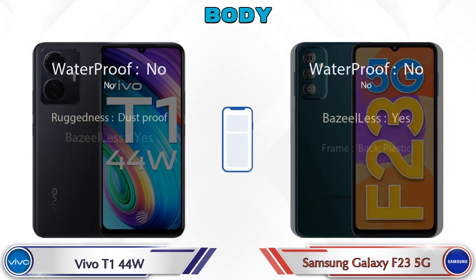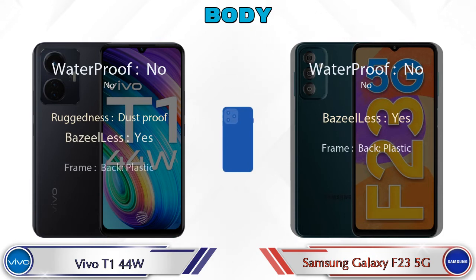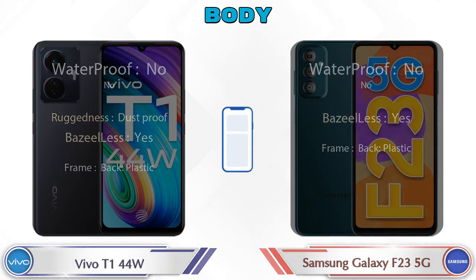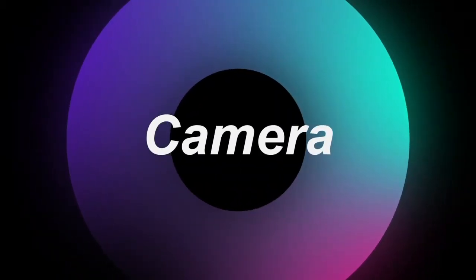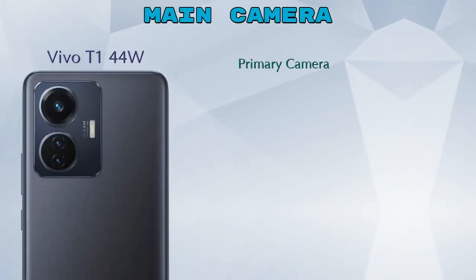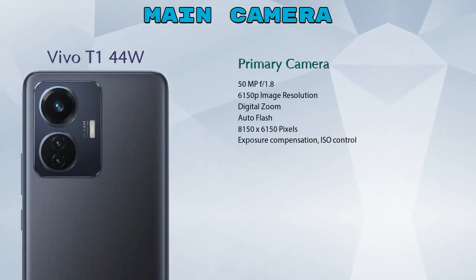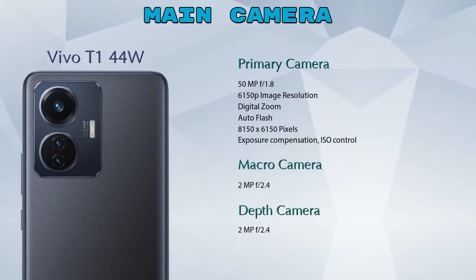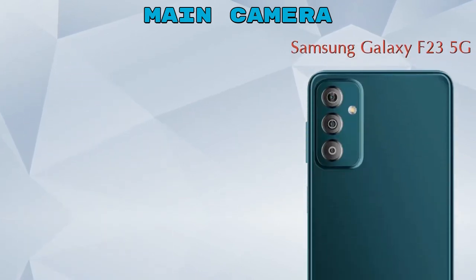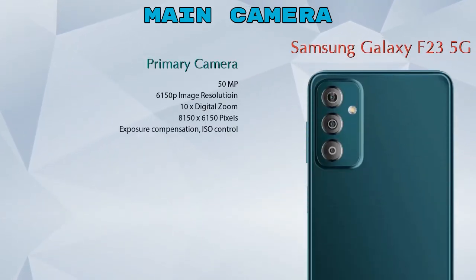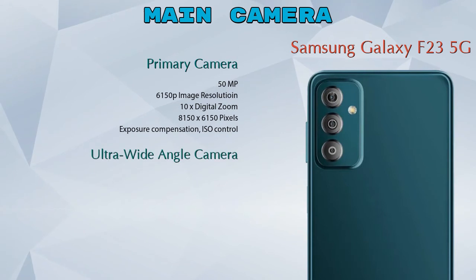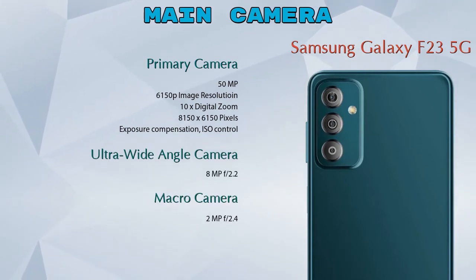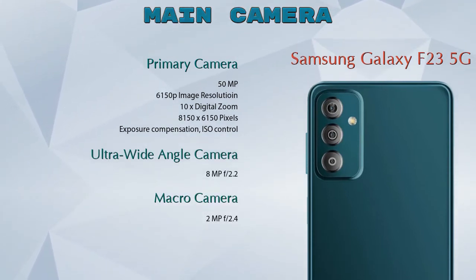Now let's see the complete detail of the body of both phones, followed by our favorite feature — camera. First, talking about the rear camera: the T1 44W has three cameras — a primary camera, a macro camera, and a depth camera. The Galaxy F23 5G also has three cameras — a primary camera, an ultra-wide angle camera, and a macro camera.